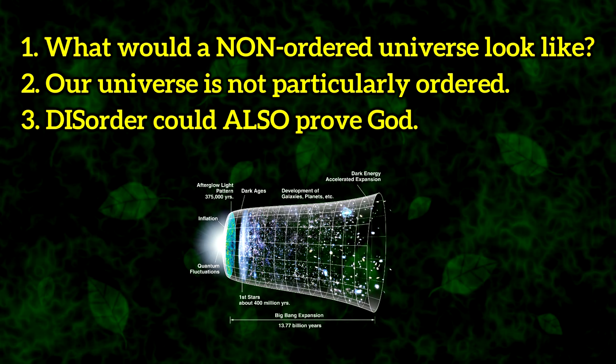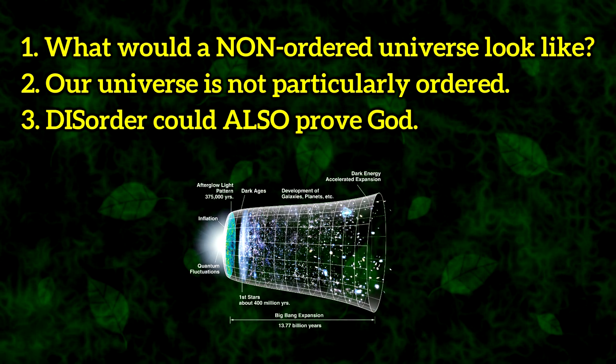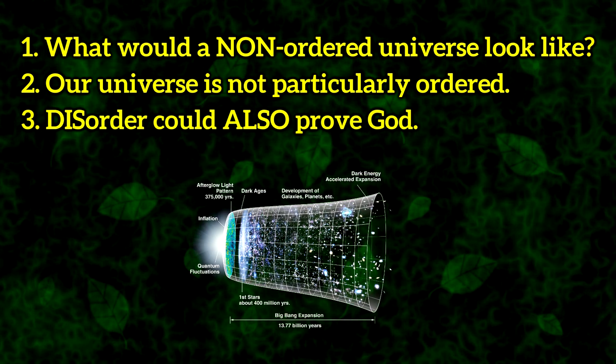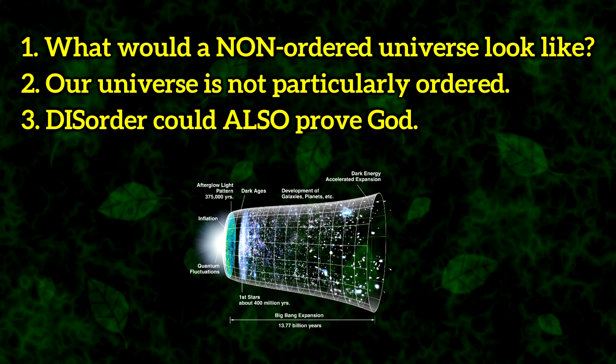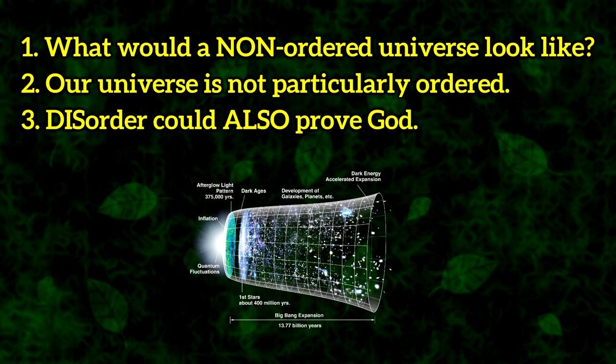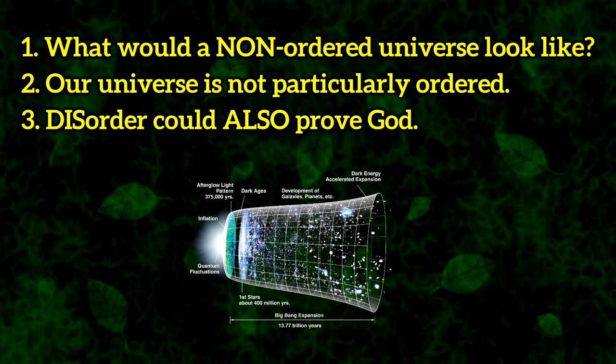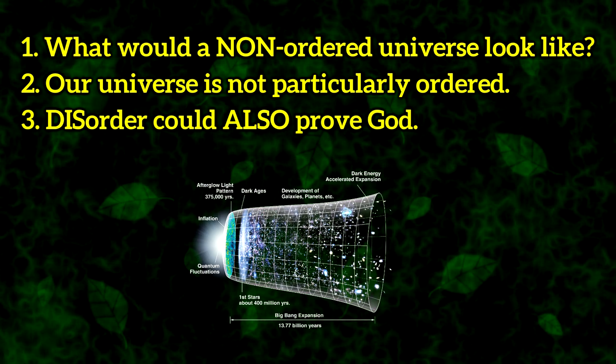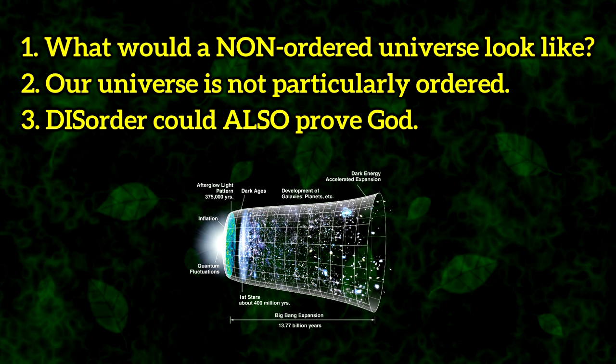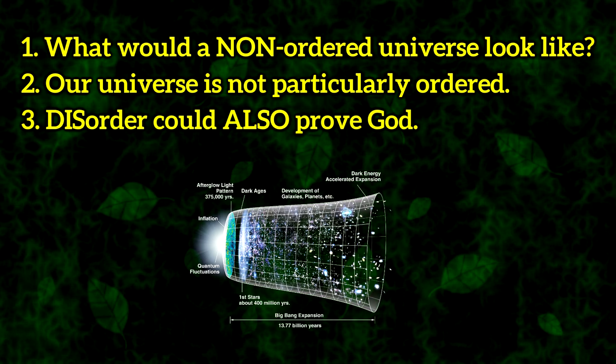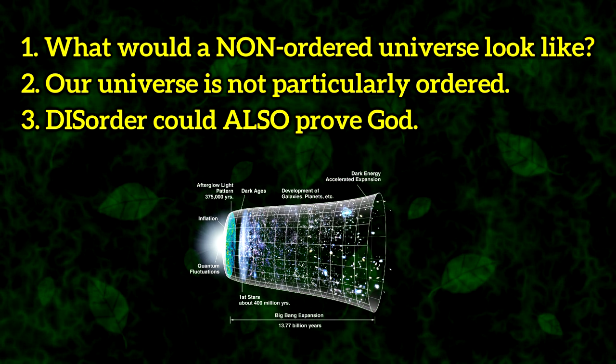Part 4. Conclusion. For all these reasons, I think it's clear that the order we observe in our universe does not point to the existence of a God. It seems that any universe must have at least some order, God or no God. It's also clear that our universe is not actually very ordered, especially compared to what we'd expect from a being like the Christian God.